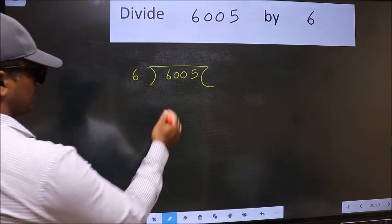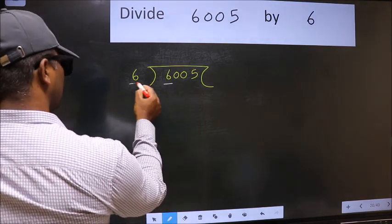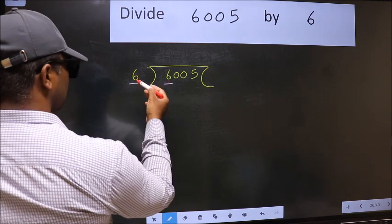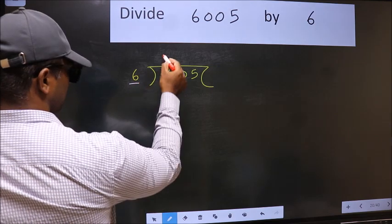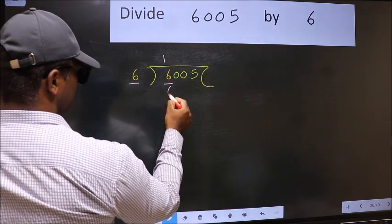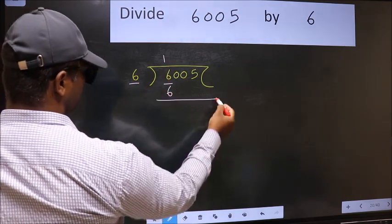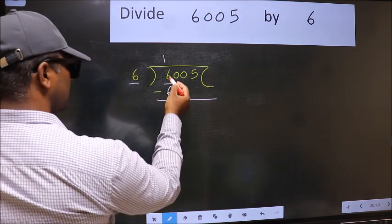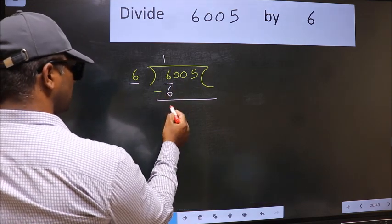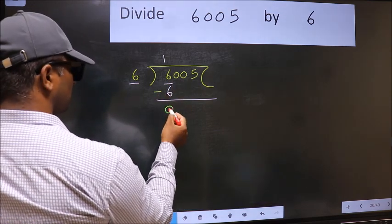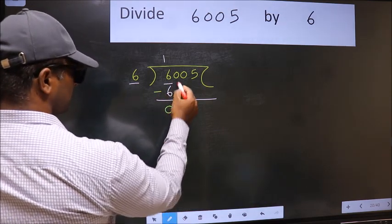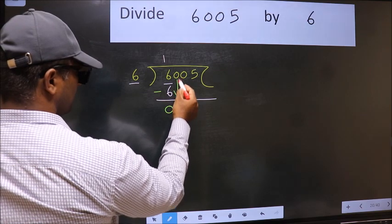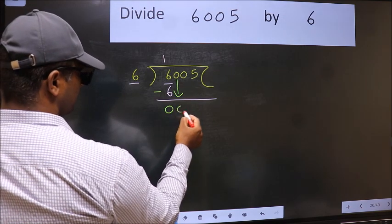Here we have 6. Here also 6. When do we get 6 in the 6 table? 6 ones, 6. Now we should subtract. 6 minus 6, 0. After this, bring down the beside number. So, 0 down.